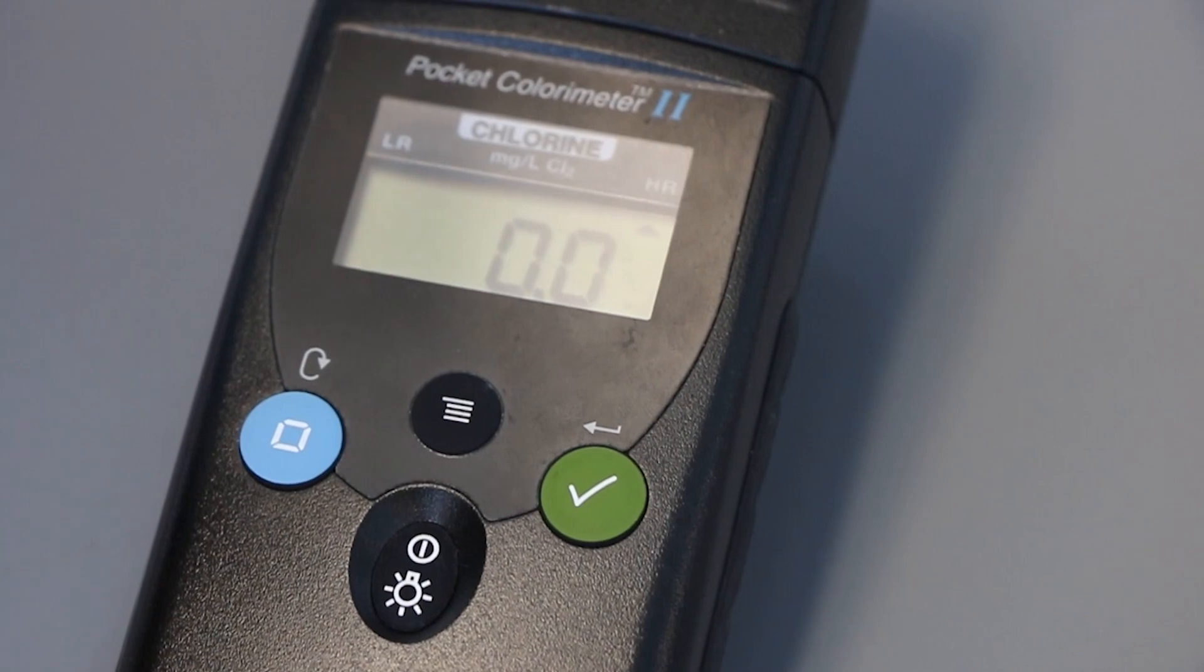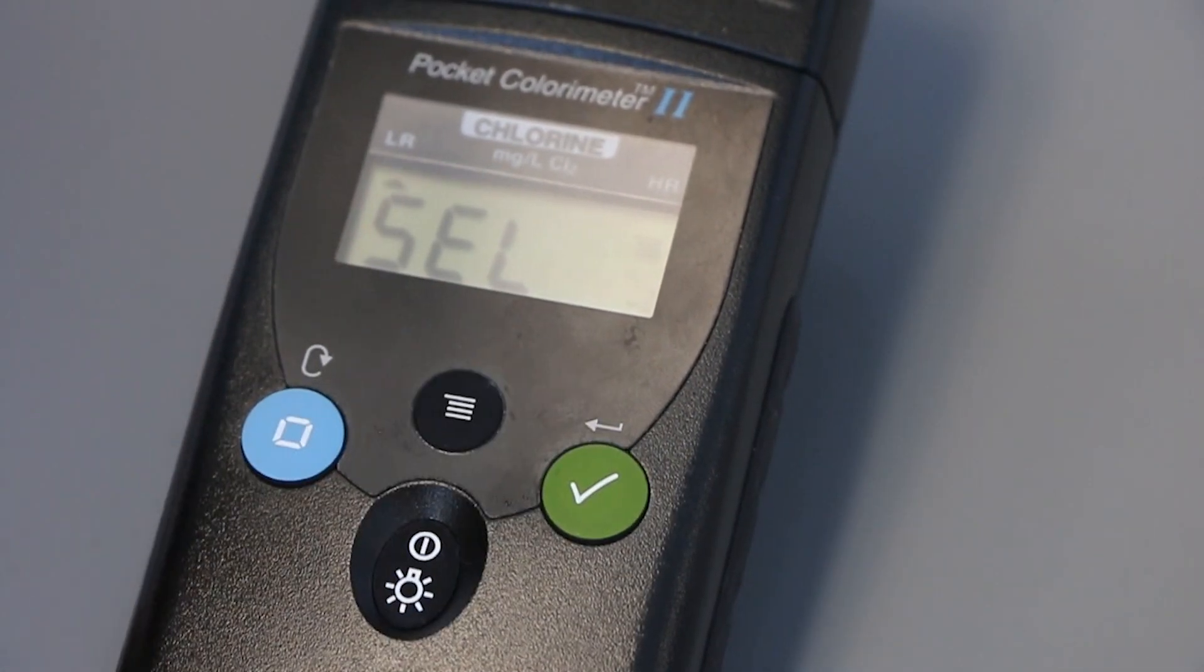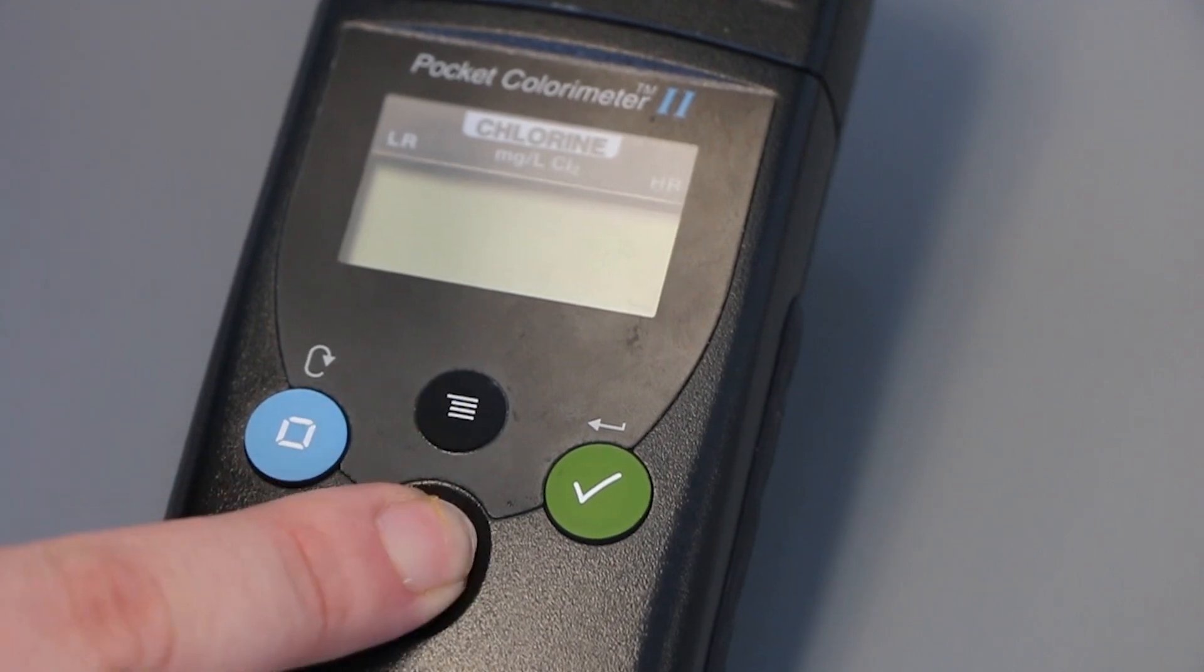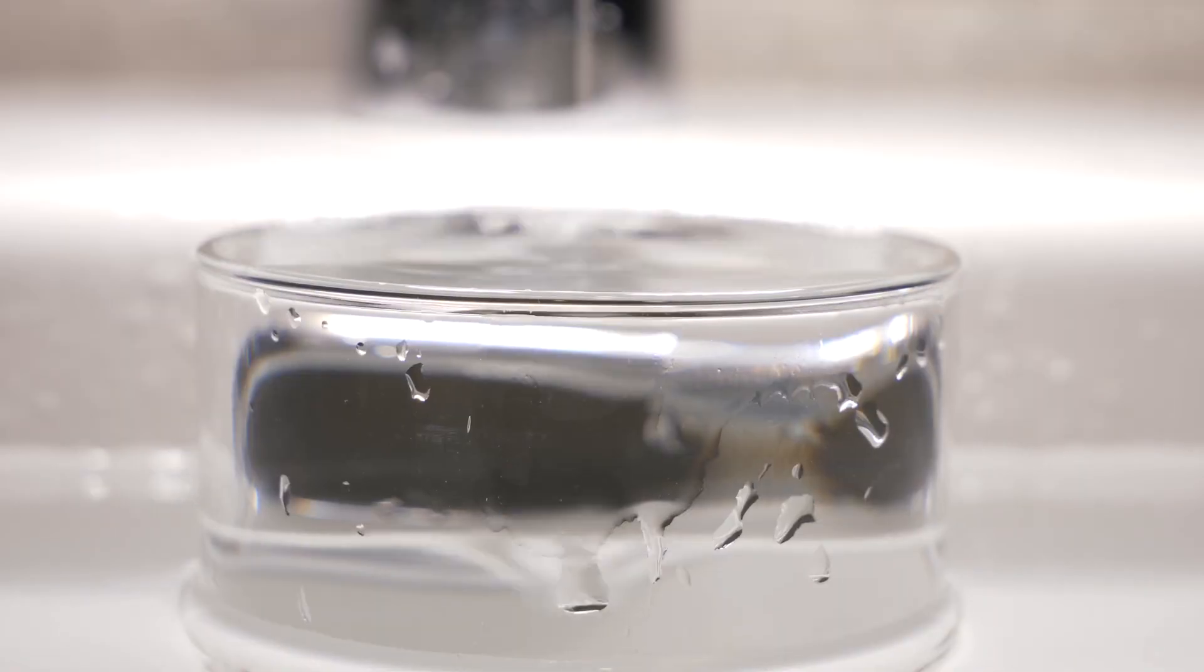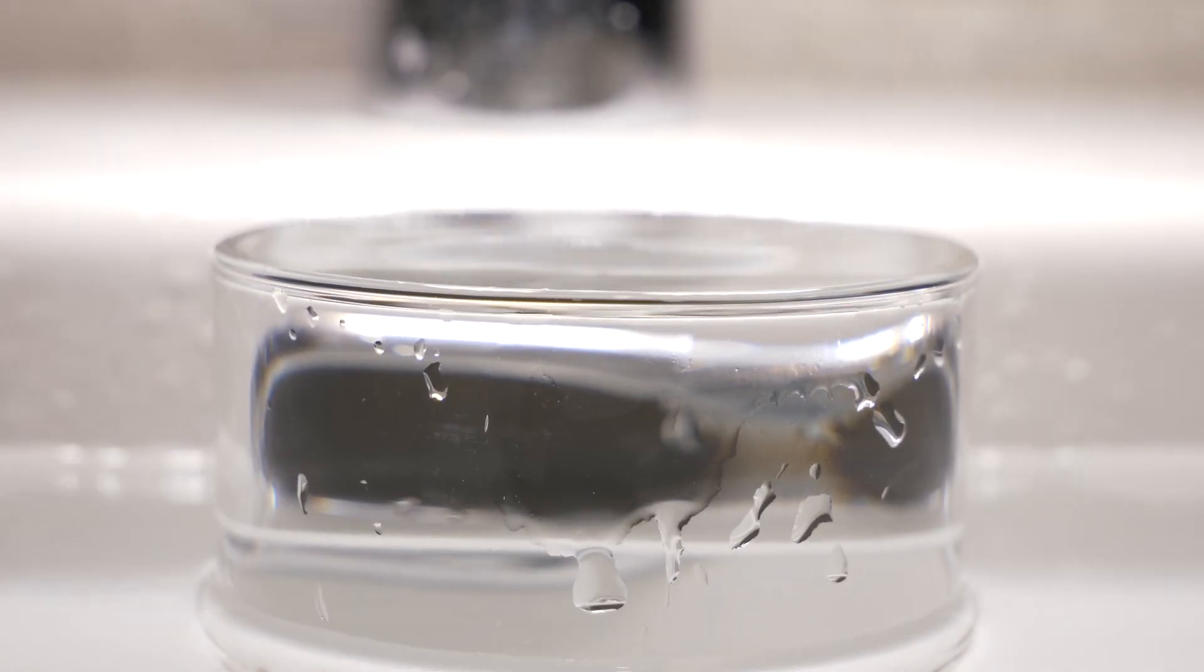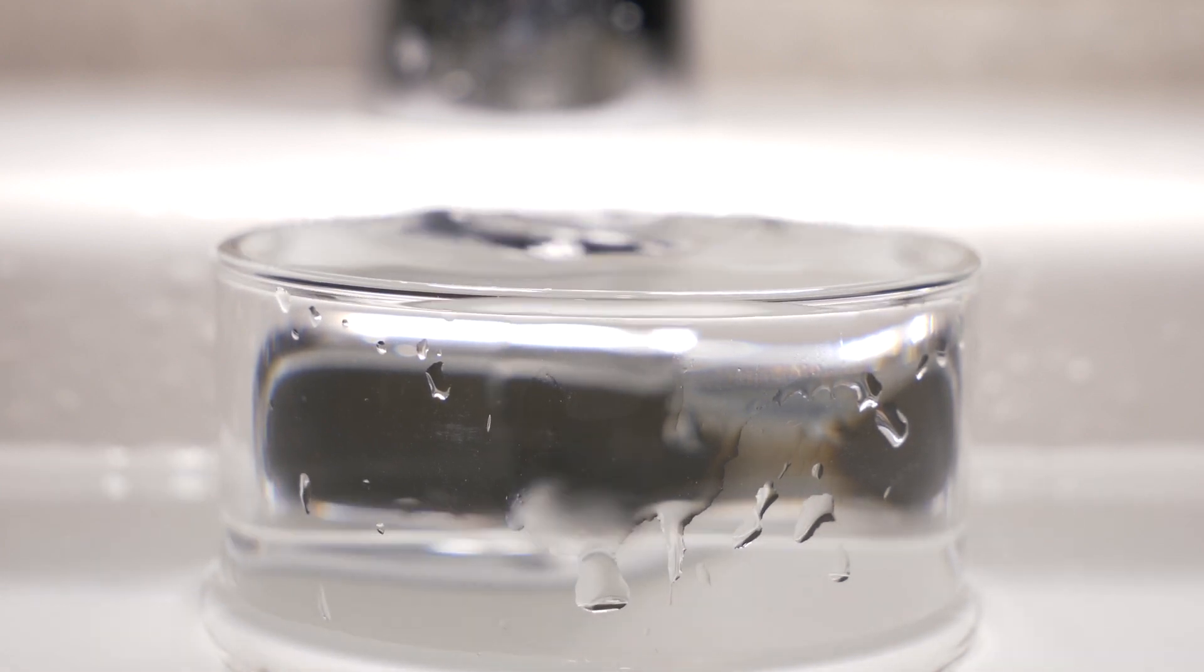To measure free chlorine residual, set your meter to the low range. High range usually doesn't capture the typical low chlorine residuals we see in community distribution systems, but may need to be used in the event that chlorine residuals are above 2.00 milligrams per liter.